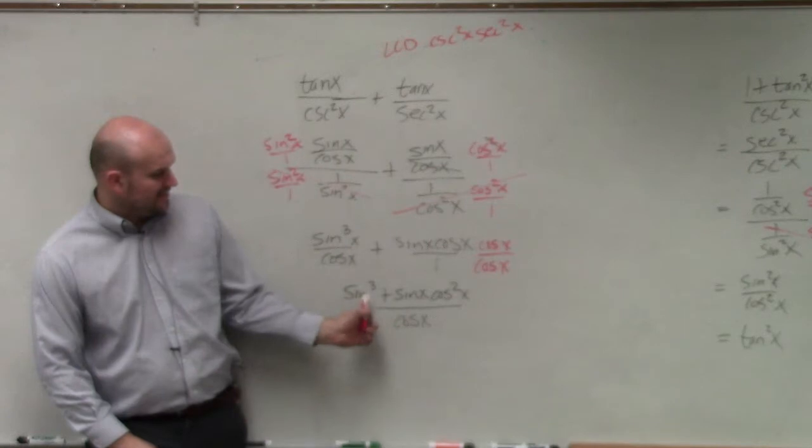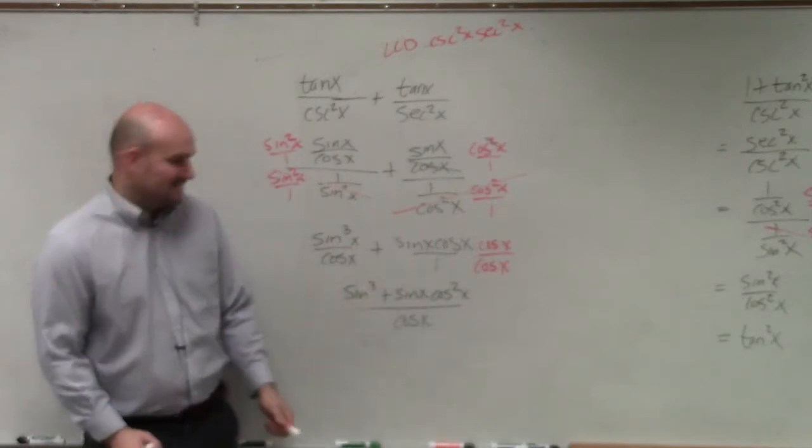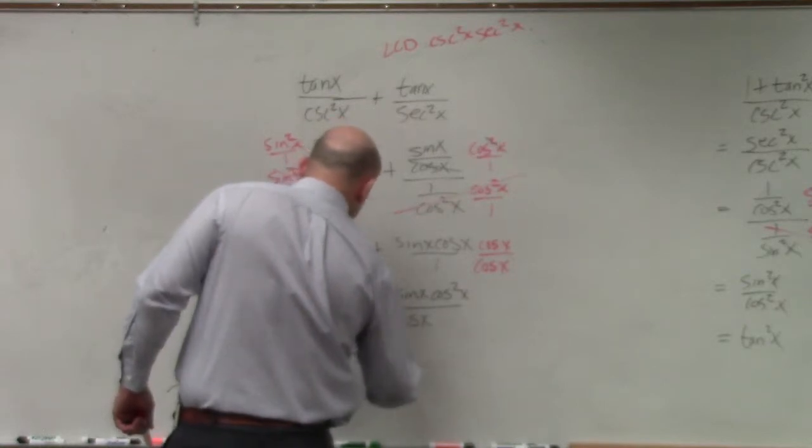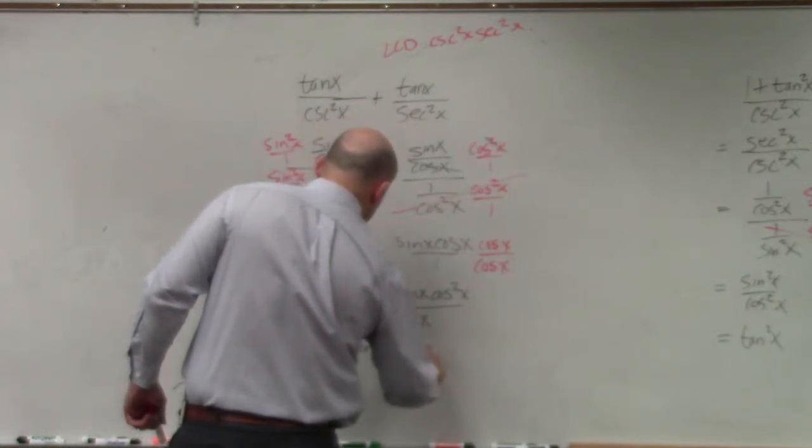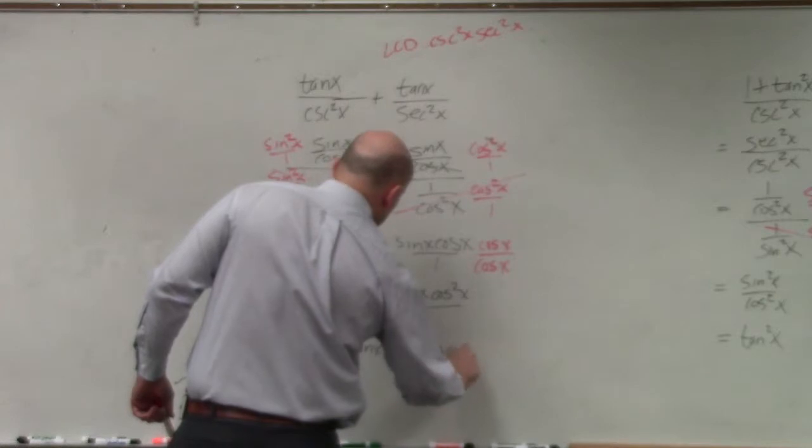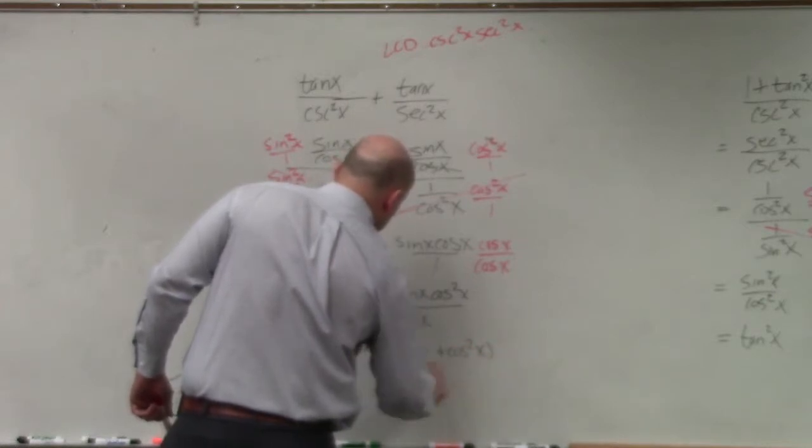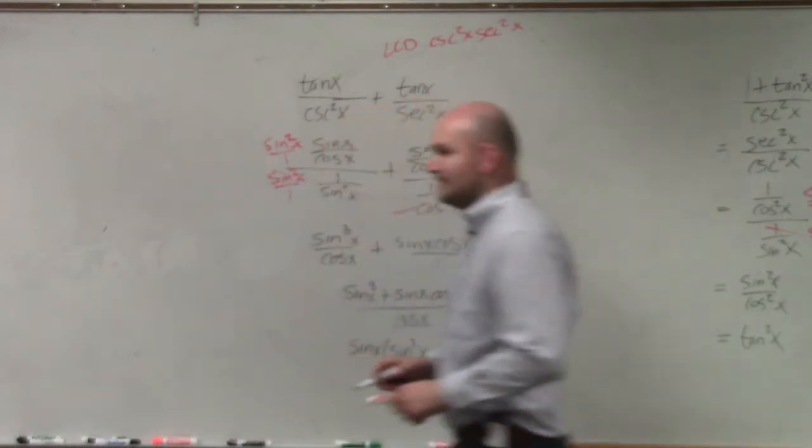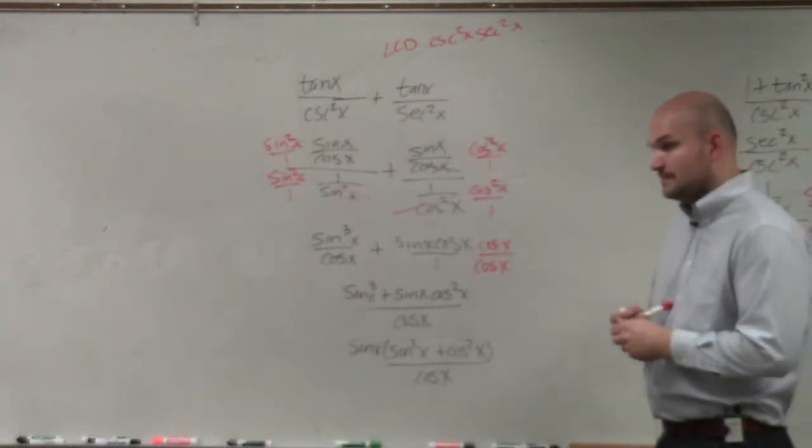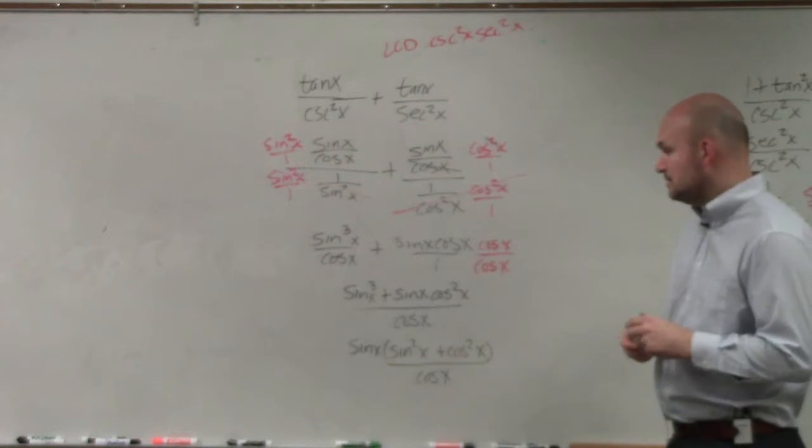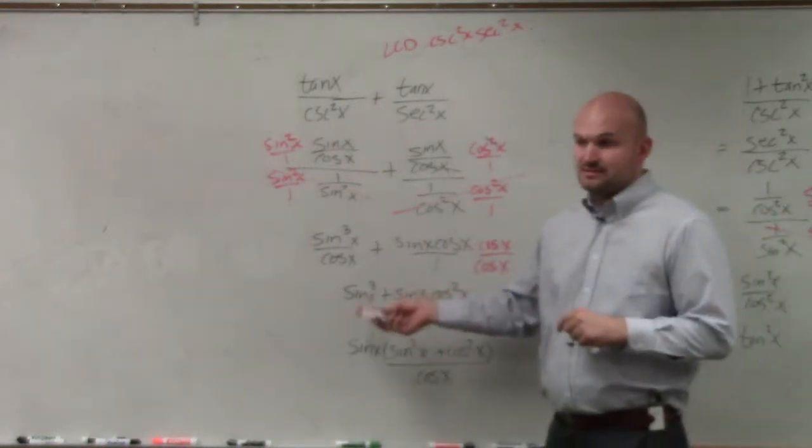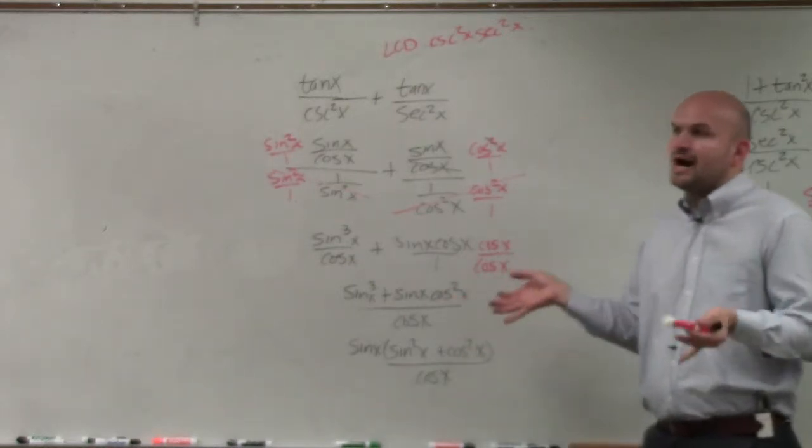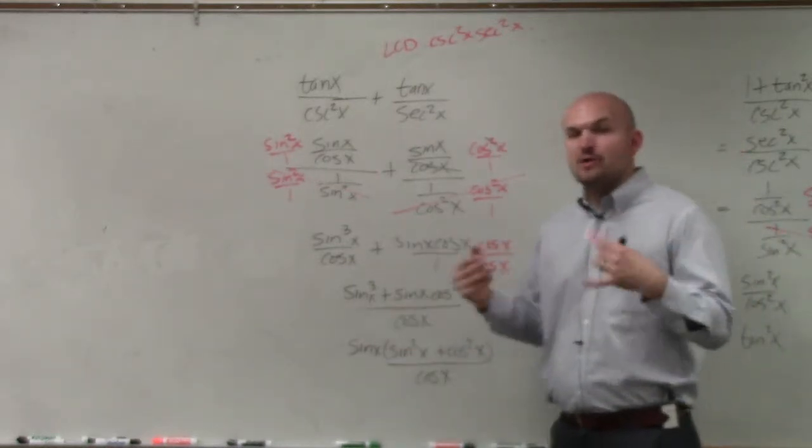Close. What do these two terms share? Sine. So if you factor out a sine of x, you get sine squared of x plus cosine squared of x all over cosine of x. Yes? It's always of x. Always. Or of theta. Or of y. There is no such thing as sine or cosine by itself. It's always of an angle.